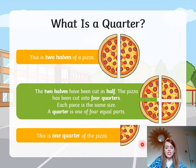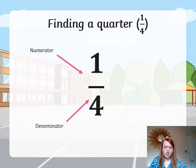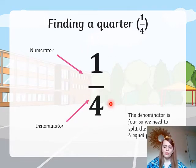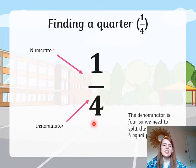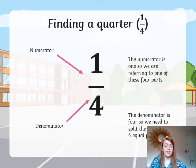Here we've got a picture of one quarter of the pizza. So how do we go about finding a quarter? Let's look at how this is written. We know the number on top is the numerator and the number on the bottom is the denominator. The denominator is four, which tells us we need to split a shape into four equal parts, and the numerator is one, which means we're referring to just one of these parts.